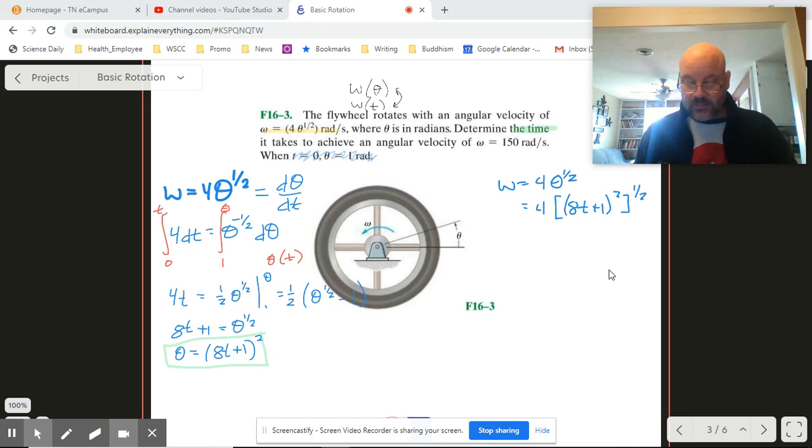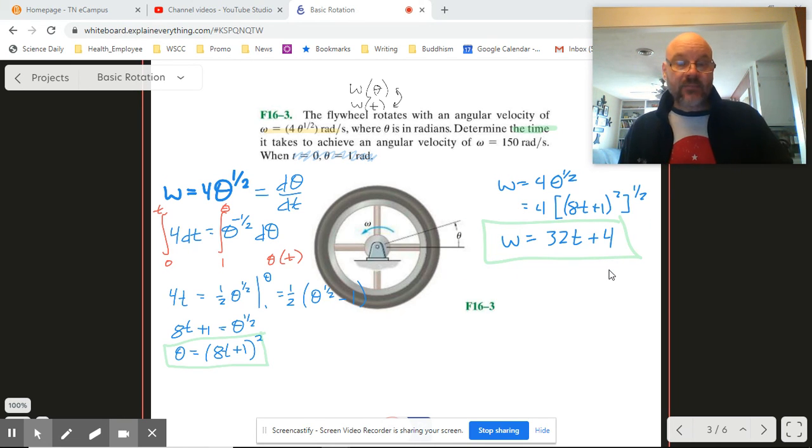Just like so. So then omega becomes, I'm going to end up with 8t plus 1 times 4 is going to give me 32t plus 4. Okay. So now we have omega as a function of time.